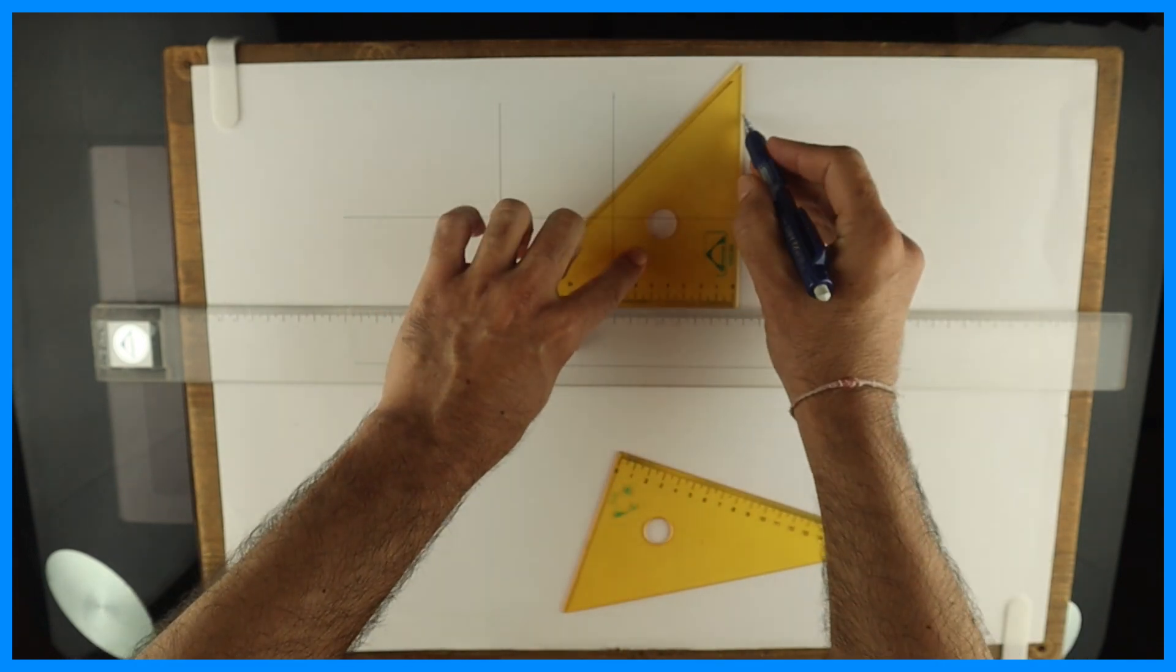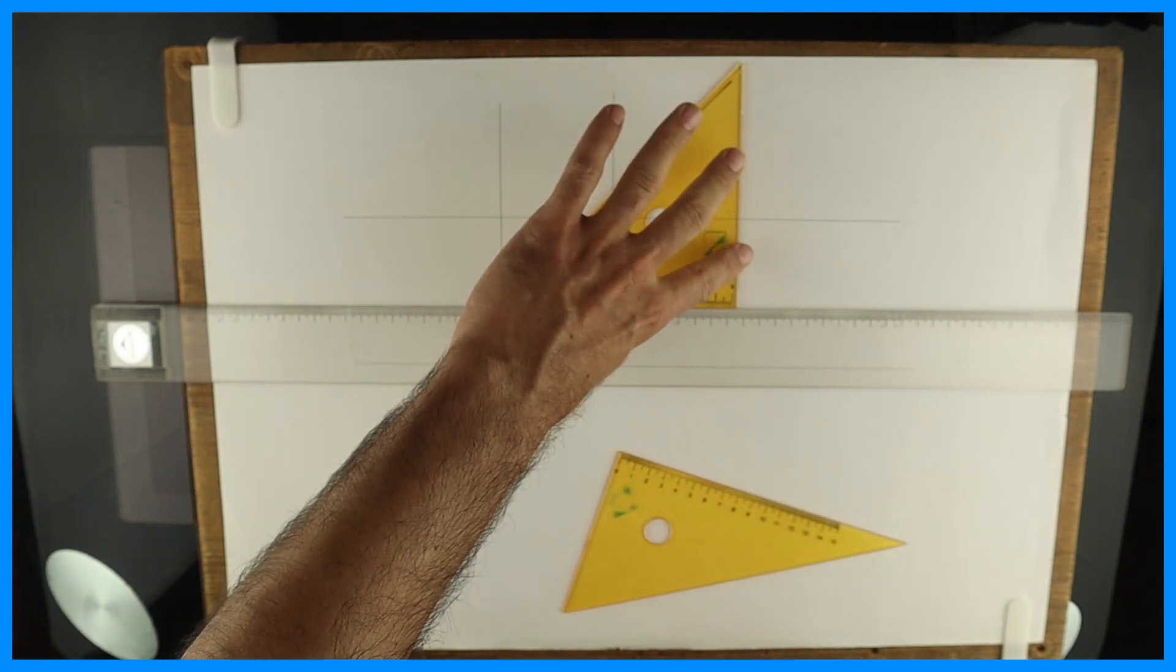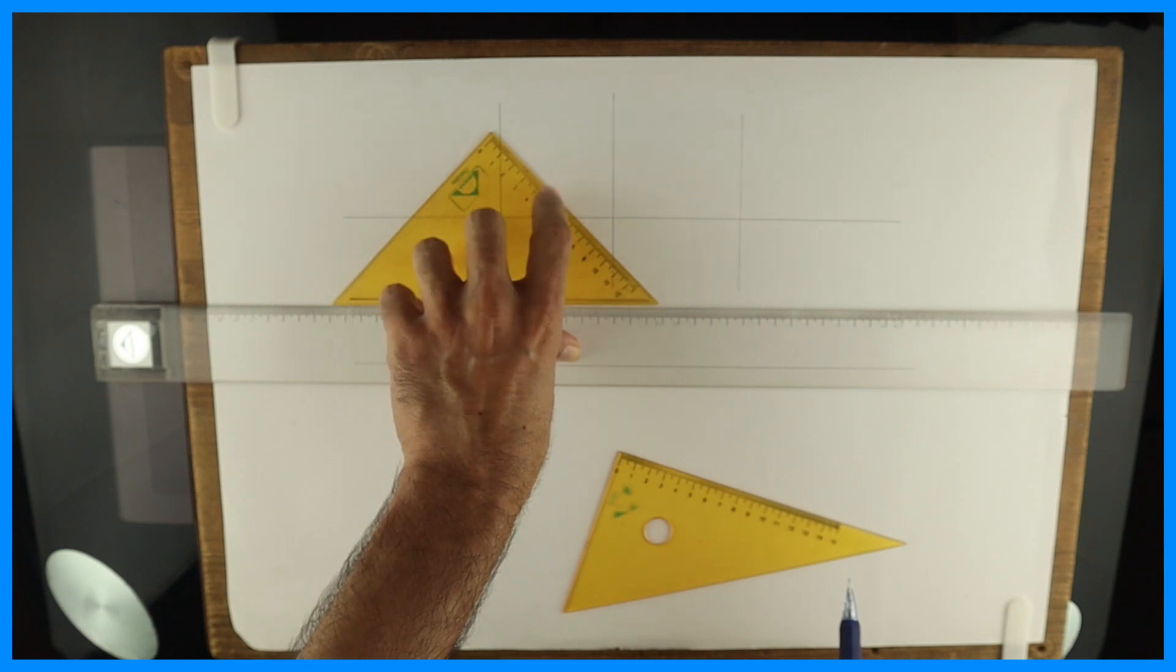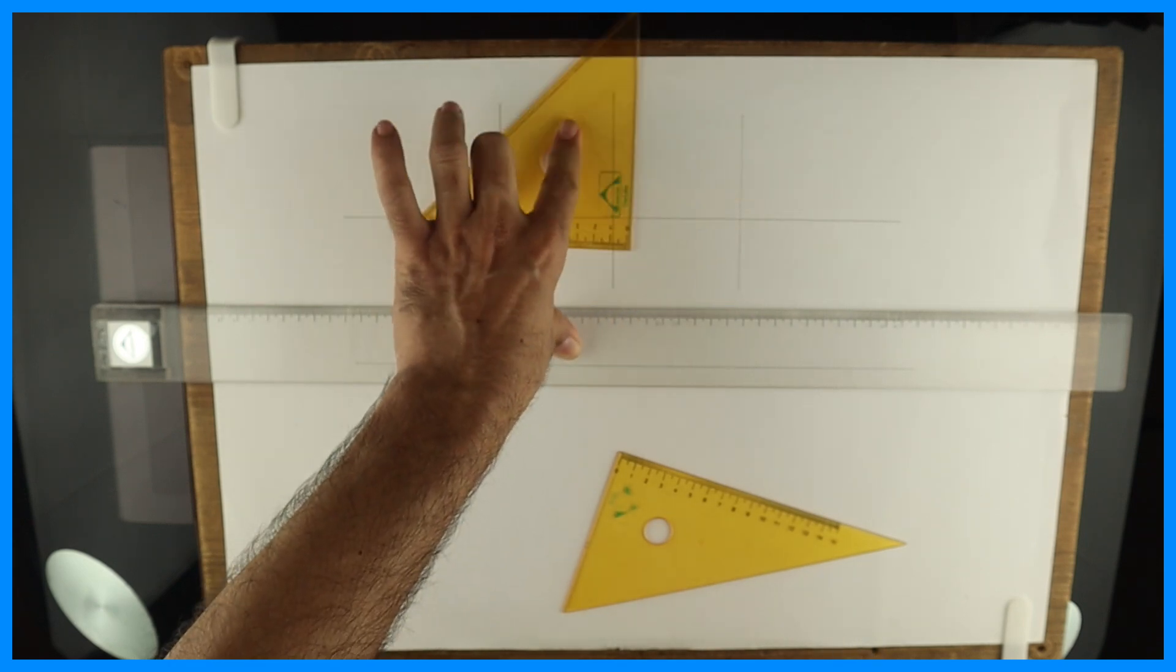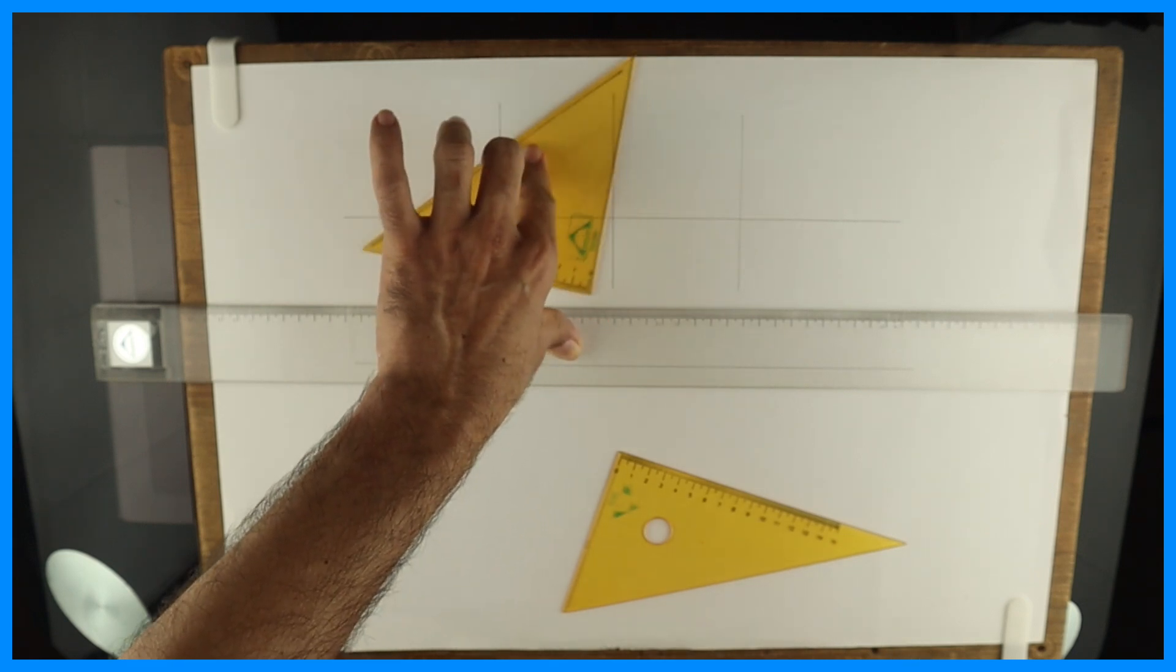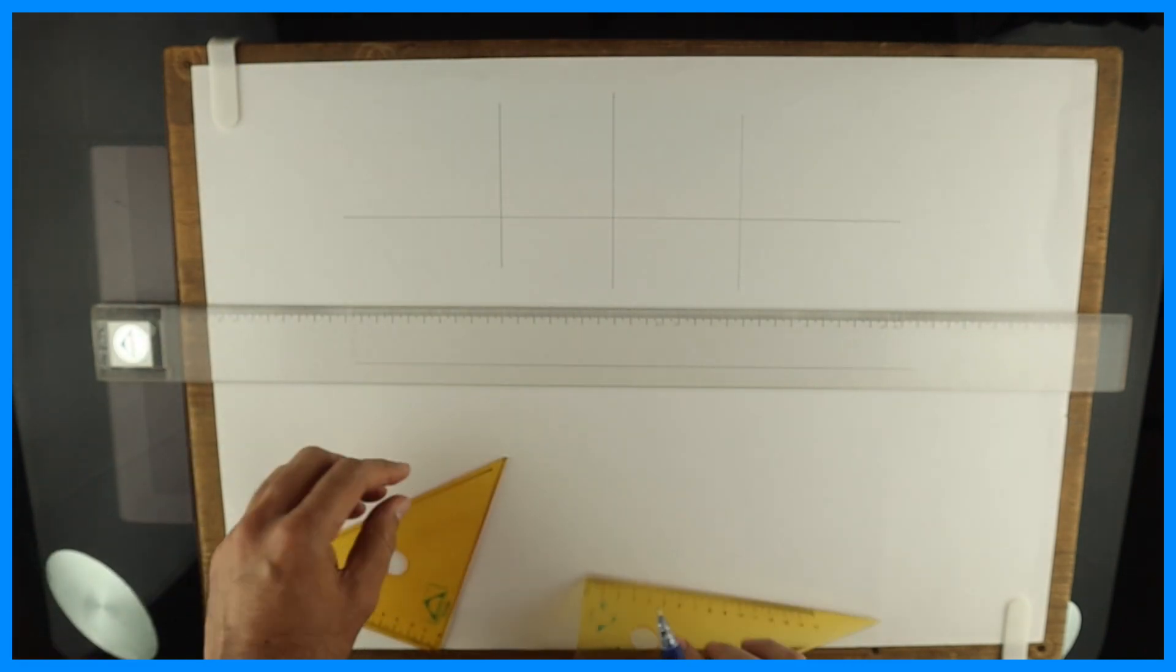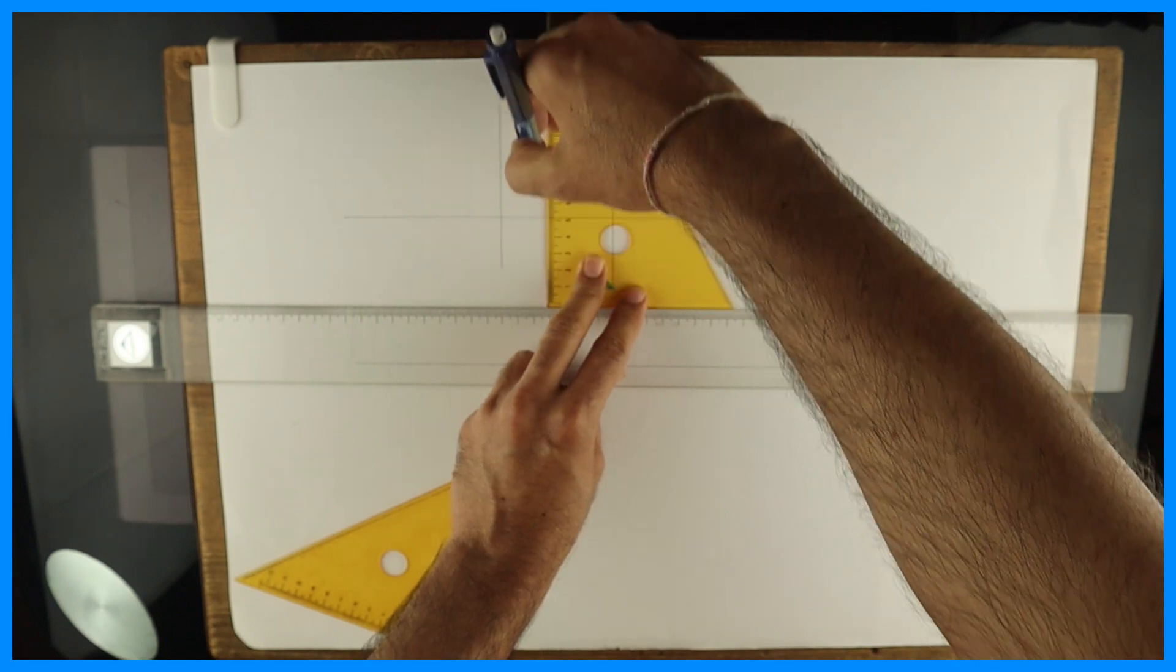And make sure that when you are using it, you put one thumb on T scale and you rotate your instrument. See this. This is how you should use your set square. So you should get used to this. That's how your speed will increase. See this. Now with this also we can draw vertical lines.